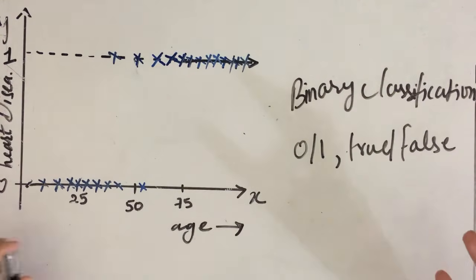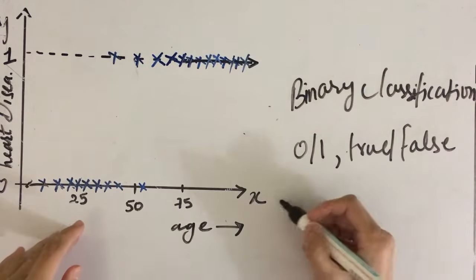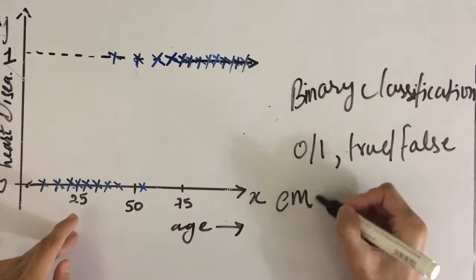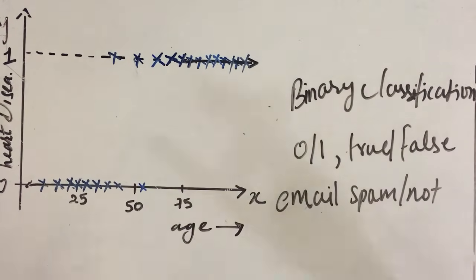Some of the applications where logistic regression can be used in real world can be to classify if the email is spam or not, or to find out if the transaction is fraud or not.